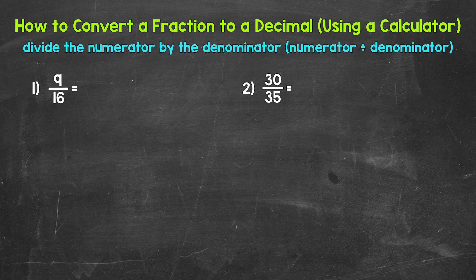Now when converting a fraction to a decimal, we can do this by dividing the numerator, the top number of the fraction, by the denominator, the bottom number of the fraction.